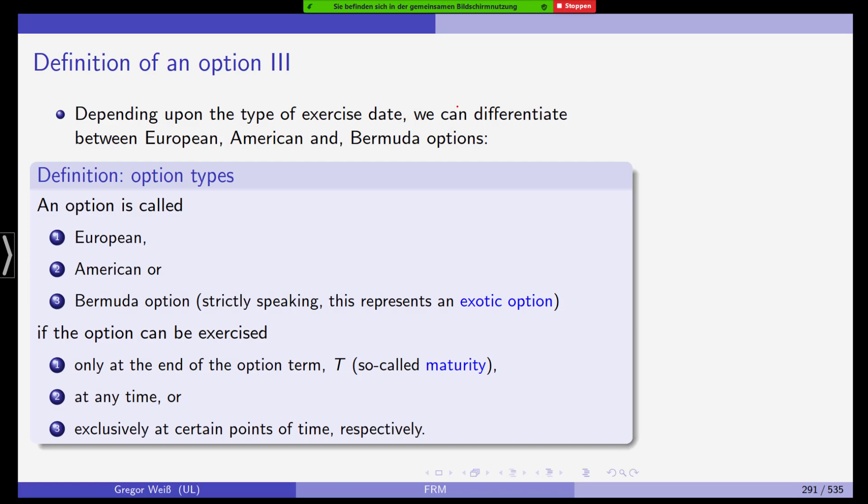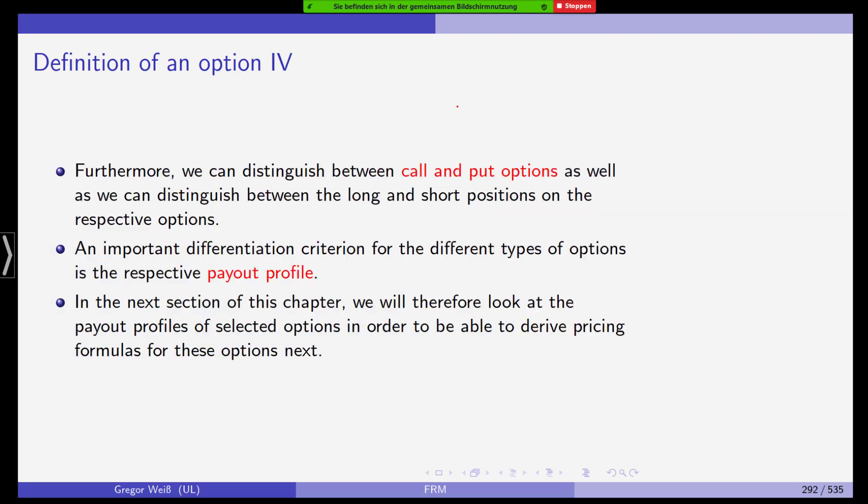Now, we have different types of options. We have European, American, and Bermudan options. An option is called European if the option can be exercised only at the end of the option term at maturity. Or it's called American if it can be exercised at any time. Or Bermuda, the Bermudan Islands, they are right between America and Europe. So if it can be exercised exclusively at certain points of time. So these three types of options do we have.